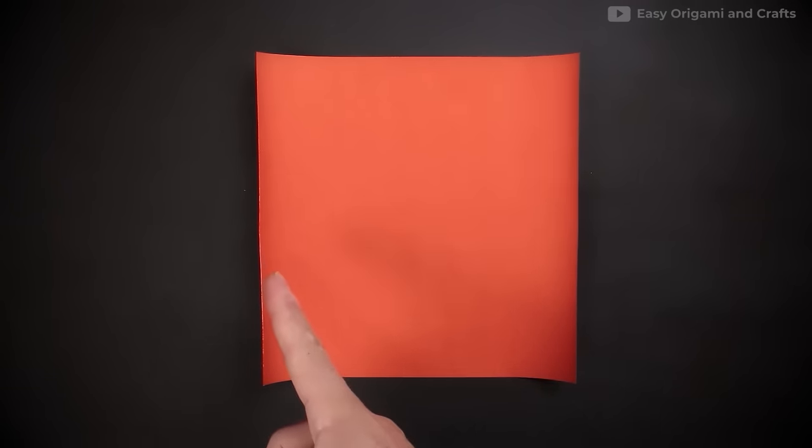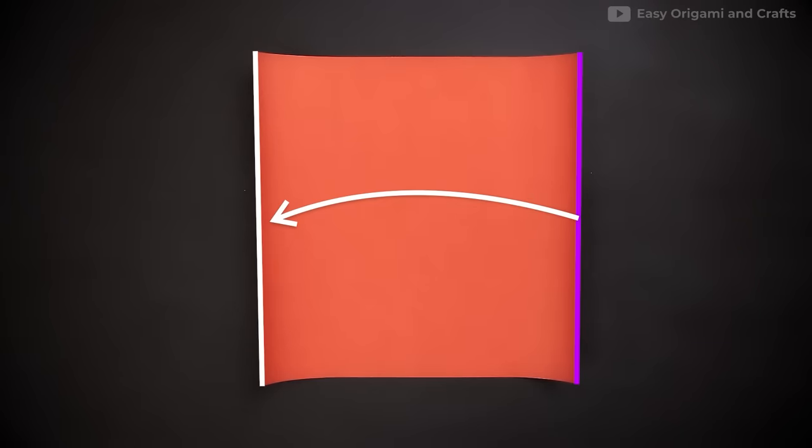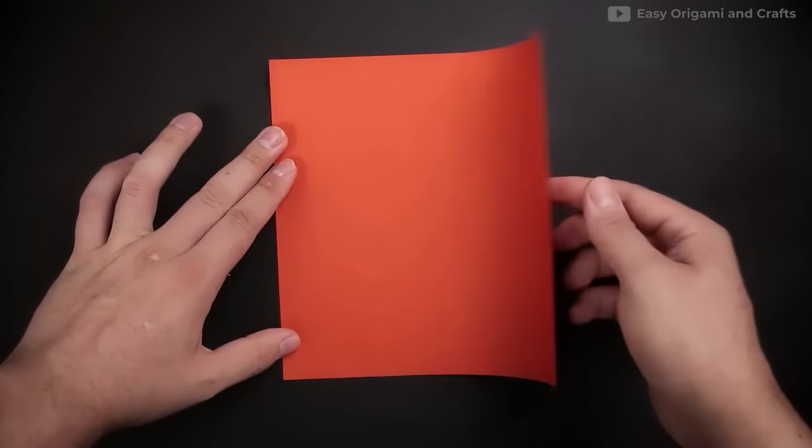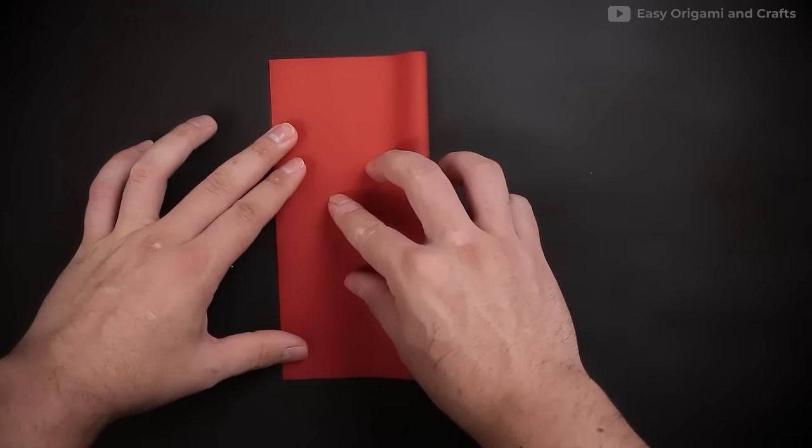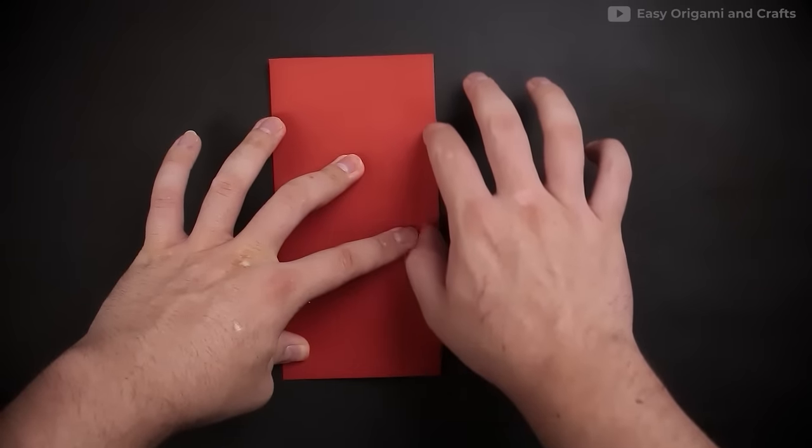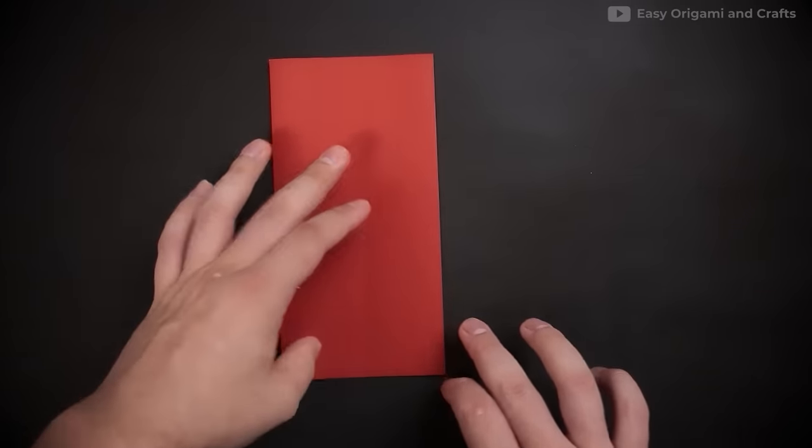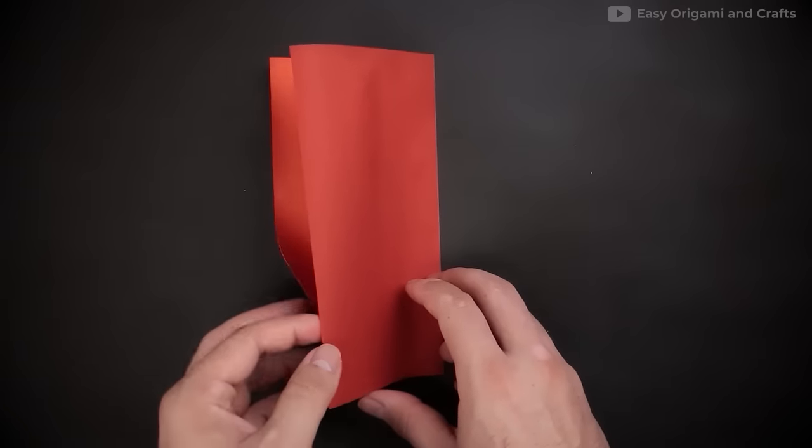As our first step we're going to have to fold it in half by bringing the right side to the left. So we'll just bring it carefully to the side and reinforce very well, creating a vertical crease. Then we unfold.